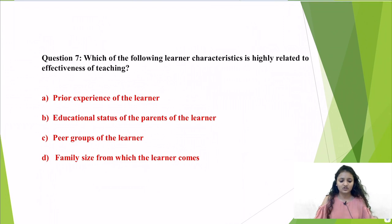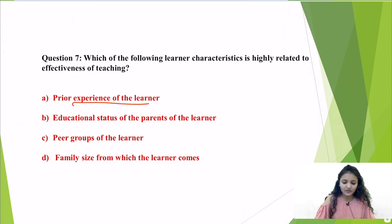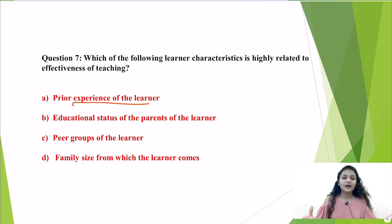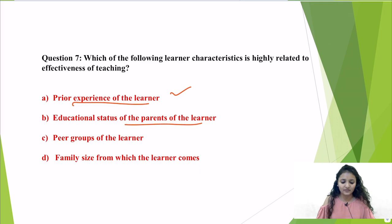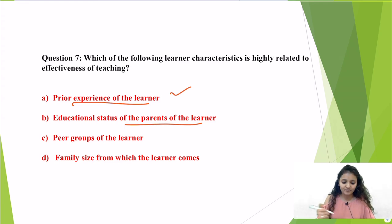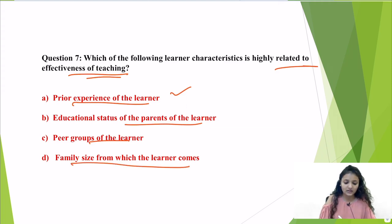Question number 7: which of the following learner characteristics is highly related to the effectiveness of teaching? Option A is prior experience of the learner — every teacher wants their students to have some prior knowledge related to the topic being taught. Option B, educational status of the parents, is irrelevant, as children from poor or no educational backgrounds can still have significant knowledge. Peer groups and family size are also irrelevant. The correct answer is prior experience of the learner.